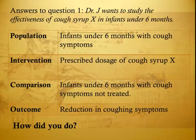Answers to Question 1. Population: Infants under 6 months with cough symptoms. Intervention: Prescribed dosage of cough syrup X. Comparison: Infants under 6 months with cough symptoms not treated. Outcome: Reduction in coughing symptoms. How did you do?